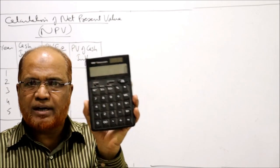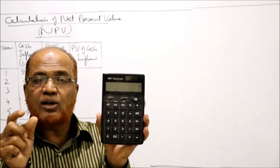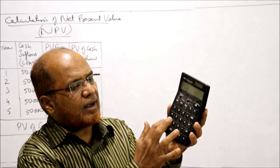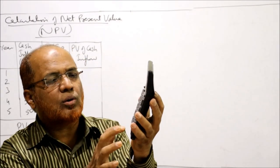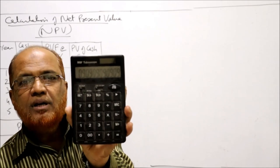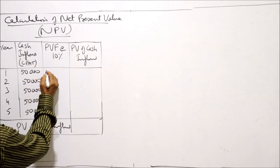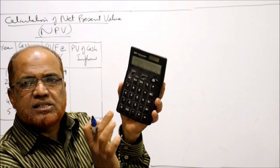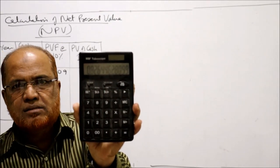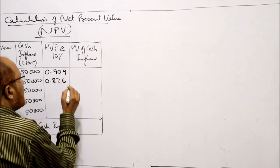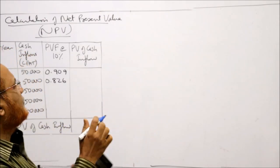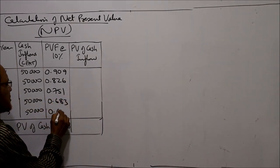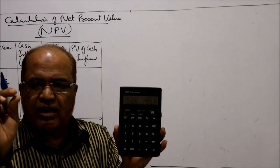To get these PV factors on a calculator: enter 1 ÷ 1.10, press equals to get 0.909 for Year 1. Then keep pressing equals to get Year 2 = 0.826, Year 3 = 0.751, Year 4 = 0.683, Year 5 = 0.621.